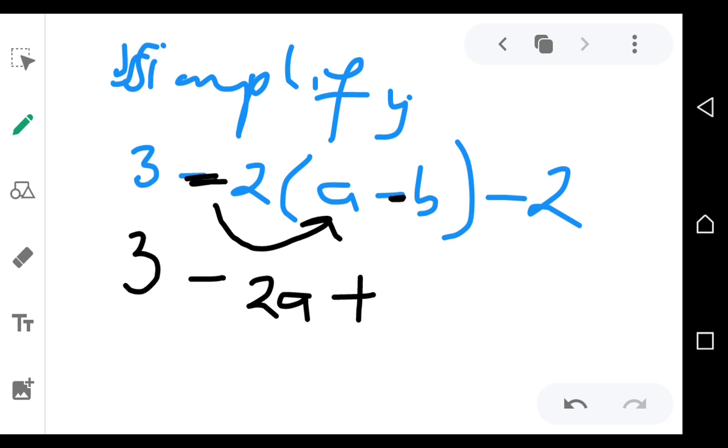Two negatives make a positive. 2 times b is 2b minus 2. When you reach here, you group the like terms. But since there are no like terms, you start with what's at the beginning, negative 2a.